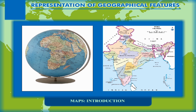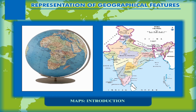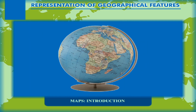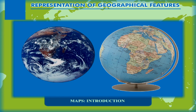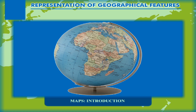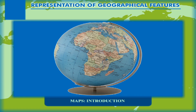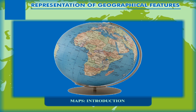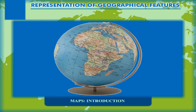Globes and maps are two important tools of geography. Both are very useful in studying the Earth's surface. Globes, which are spherical in shape, are the exact replica of the Earth. As the globes are of the same shape as that of the Earth, they represent the shape of the landmass and the water bodies with great accuracy. However, as the globes always show the entire Earth, these cannot be used to depict any small area.